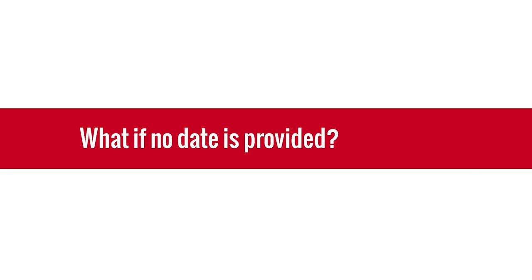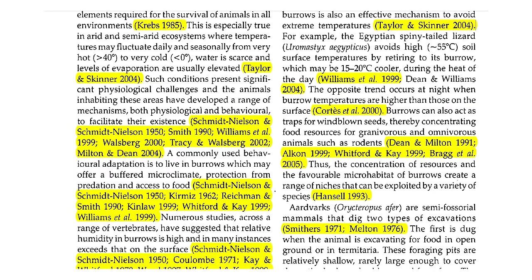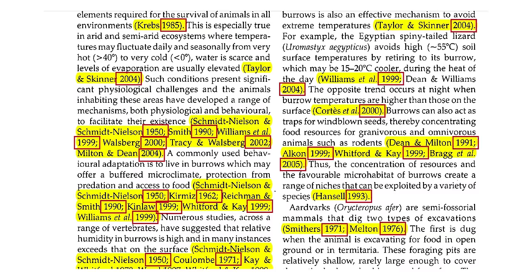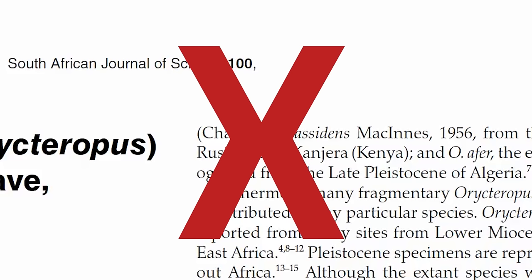What if there is no date provided? Because APA is primarily used in the sciences, the date of cited information is more important than in other styles. So anytime there is a publication date, even with a web article, it should be included. If there is no date provided, you may actually want to rethink using the source, because it could be outdated. If you do need to use the source and feel it's credible, you can put 'n.d.' in place of the date to indicate that no date is available.